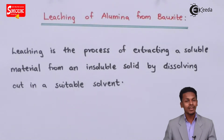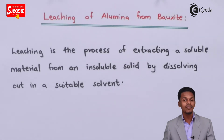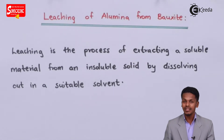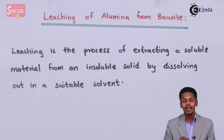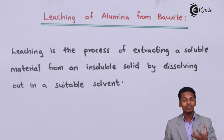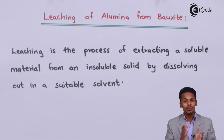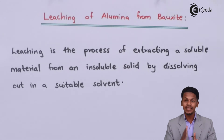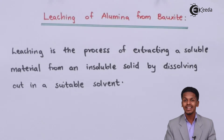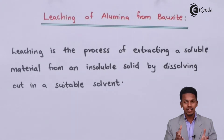In this case we are talking about the leaching of alumina from bauxite. That means we have to extract the soluble ore part and eliminate the insoluble impurity — that is what this process is known as leaching. Leaching of alumina from bauxite involves two different methods.